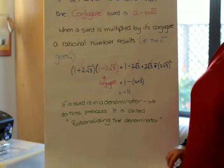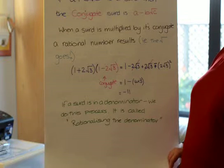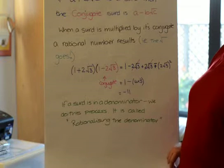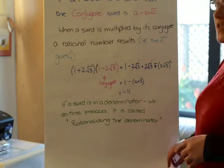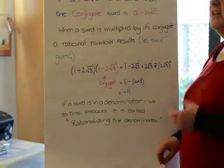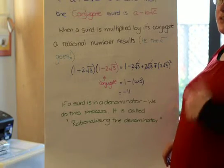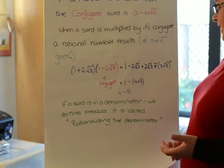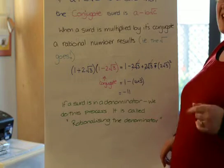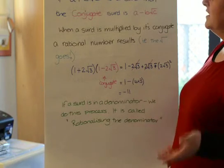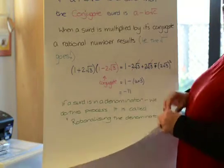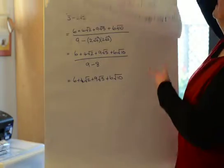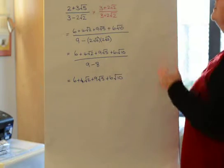If we have a surd in a denominator, we don't like it. It's very difficult to do stuff with surds in the denominator. And by stuff, I mean separating them out, multiplying, dividing, all of that sort of thing. So what we do is we essentially remove it. And this process is called rationalising the denominator. And basically, we multiply it by the conjugate.